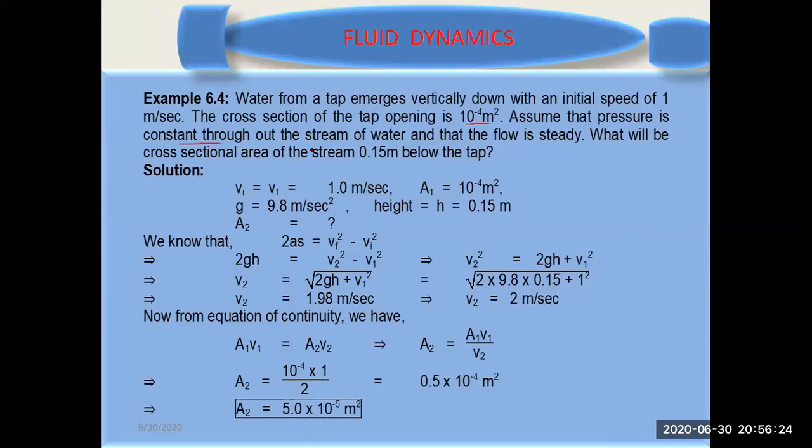Assume that the pressure is constant throughout the stream of the water and the flow is steady. This is the basic condition we apply. What will be the cross sectional area of the stream 0.15 meter below the tap?